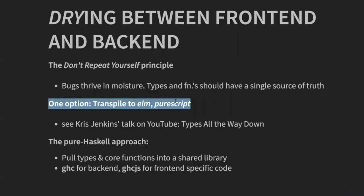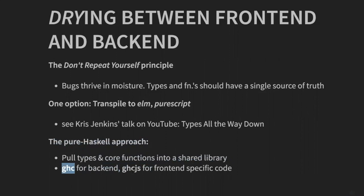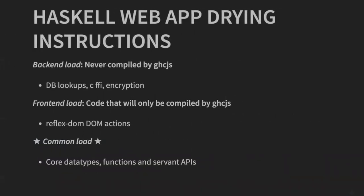How can we achieve some DRYness? One option is to take some of our Haskell types or functions and transpile them into a more front-end-focused functional language like Elm or PureScript. If you haven't seen Chris Jenkins' talk 'Typed All the Way Down,' he gives a great overview of how you can do this with a package like `elm-export`. That's a really promising way. Another way — which I'm going to describe right now, with a different set of pros and cons — is the pure Haskell approach: pull types and functions into a shared library, then use GHC to compile the back end and GHCJS to compile the front end, sharing everything within the same language.